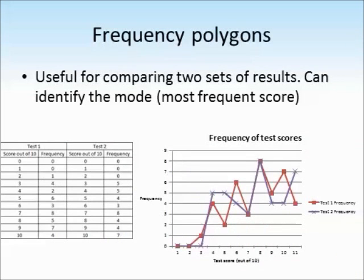A frequency polygon is useful if you want to compare two sets of results. So you can't do that on a histogram. You can also use it to identify the mode. So in this case, we're looking at the most frequent test result. We can see that the mode is eight. You can use different colours to represent different sets of results.